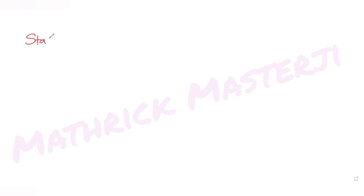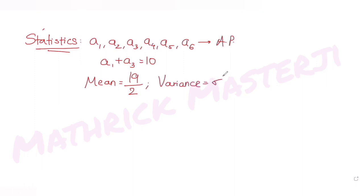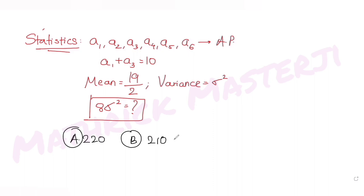Today's question is from the topic of statistics. The question tells us: let the six numbers a1, a2, a3, a4, a5, a6 be in arithmetic progression. We are given that the sum of the first and third term is 10. Further, the mean of these six numbers is 19 over 2, and the variance is given as sigma square. The question asks us to find the value of 8 times sigma square. The answer choices are 220, 210, 105, and 200.